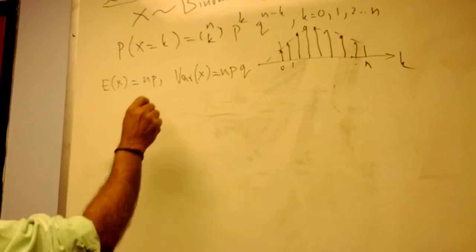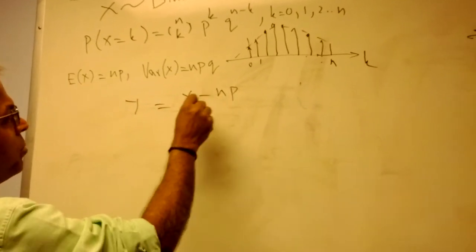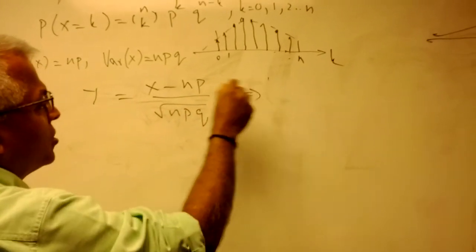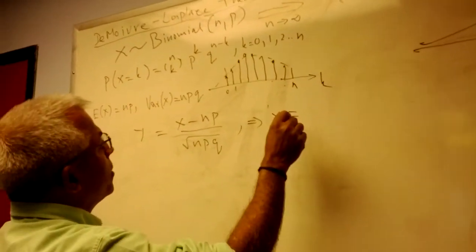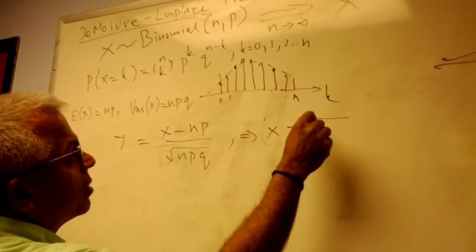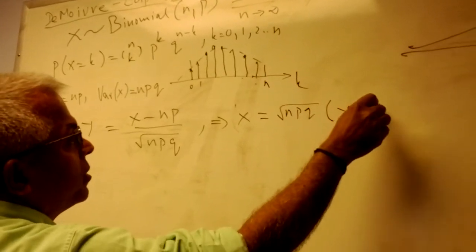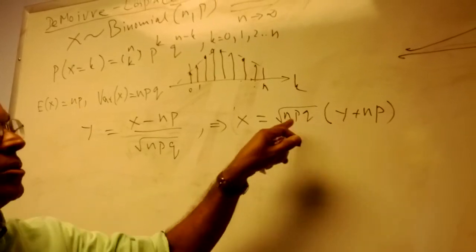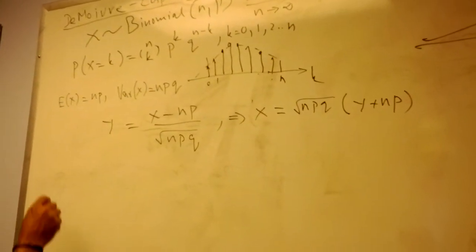So instead of working on x directly, I'm going to work on a normalized random variable y = (x − np) / √(npq). This is the same as saying x = √(npq) · y + np. So if I can show that y is Gaussian, then x, being a linear transformation of a Gaussian, is also Gaussian. That's the approach I'm going to take.